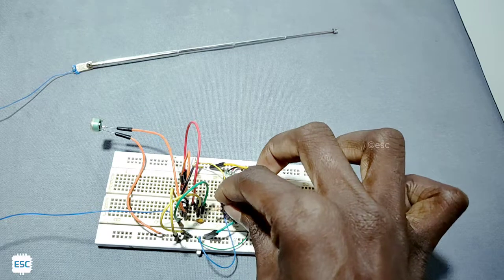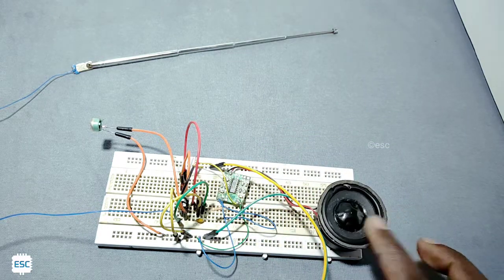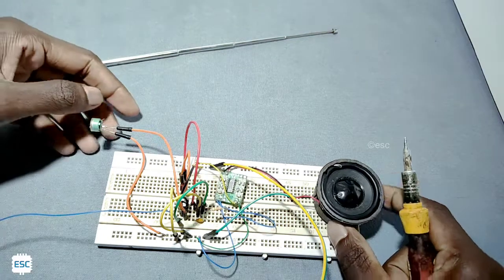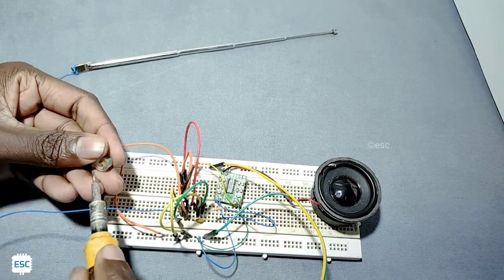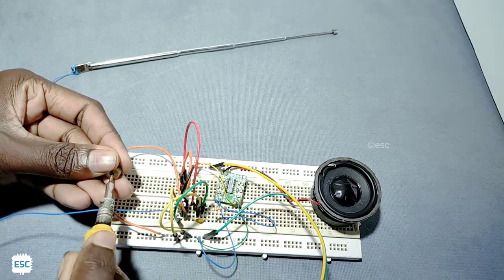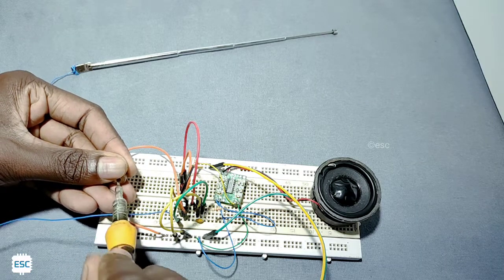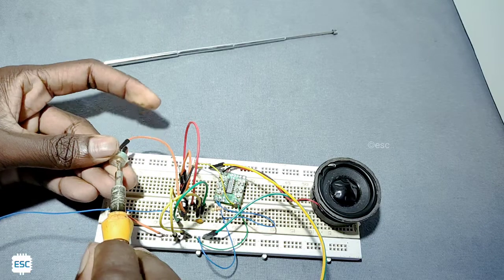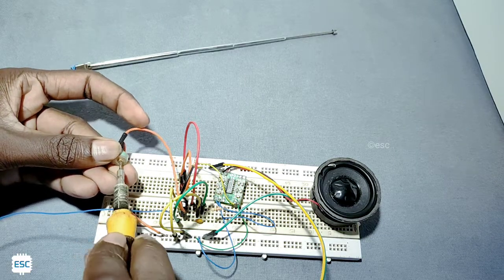I added one more resistor. Now let's tune the radio by turning the knob of the variable capacitor. You can hear the noise, so it's working.